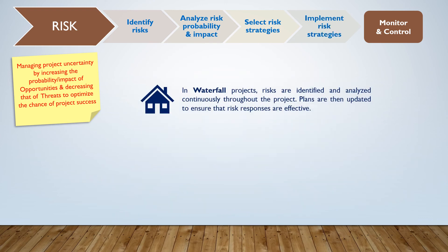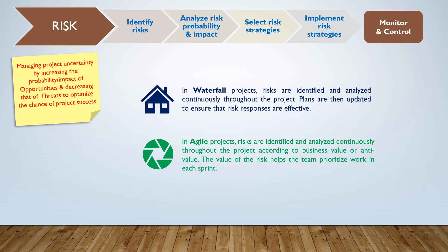In waterfall projects, risks are identified and analyzed continuously throughout the project, and plans are updated to ensure that risk responses are effective. In agile projects, risks are identified and analyzed continuously throughout the project according to business value or anti-value. The value of the risk helps the team prioritize work in each sprint.